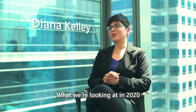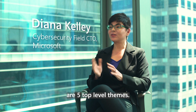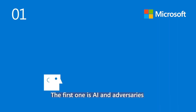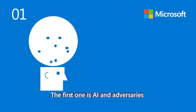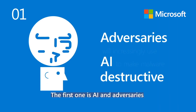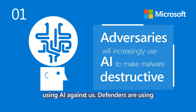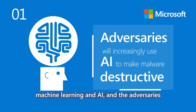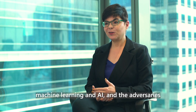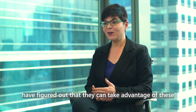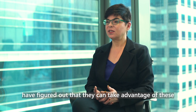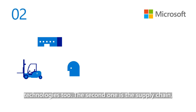What we're looking at in 2020 are five top-level themes. The first one is AI and adversaries using AI against us. Defenders are using machine learning and AI, and the adversaries have figured out that they can take advantage of these technologies too.